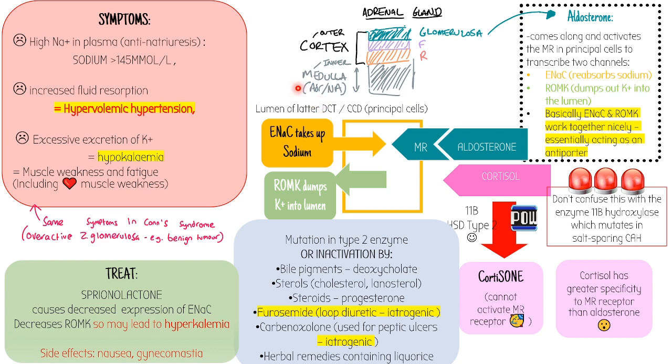So how are you going to treat it? You want to fix the enzyme, but there's currently nothing to fix the enzyme. Or we could inactivate the MR receptor, so that's what we do. We inactivate the MR receptor, therefore stopping these downstream effects with our drug spironolactone. This causes decreased expression of ENAC and decreased ROMK. However, because of the decrease of ROMK, we may now get hyperkalemia because we're not excreting potassium. That can cause a side effect of nausea, and spiro has the unfortunate side effect of gynecomastia, meaning male breast tissue growth.